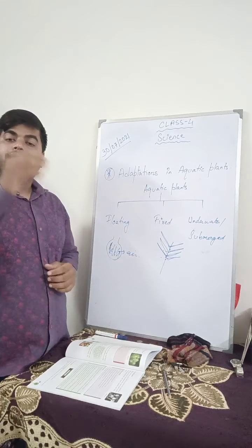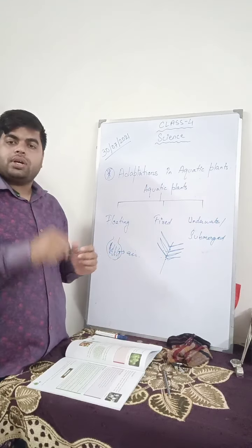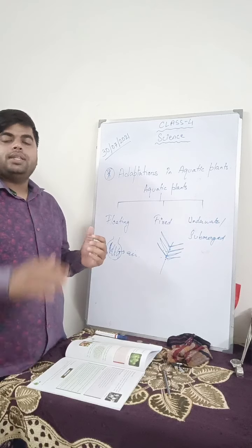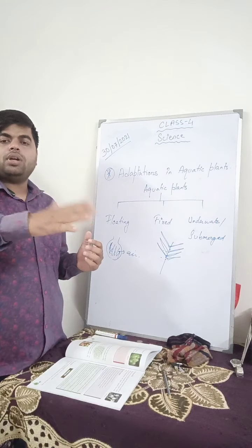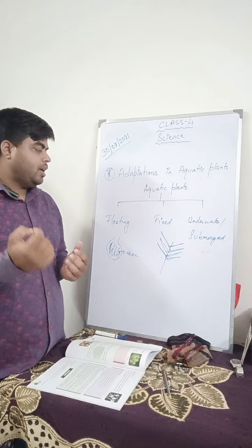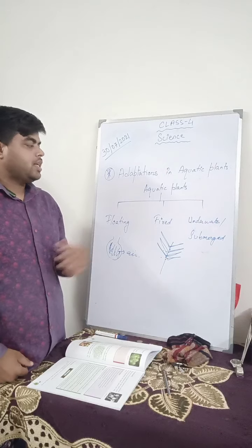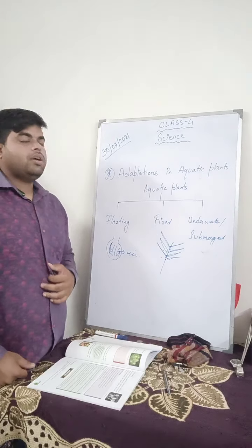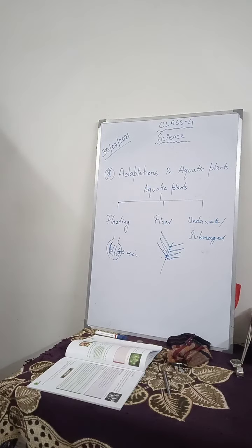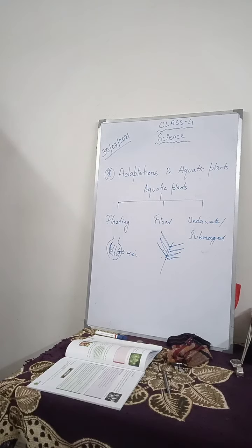Fixed plants — their roots are fixed to the soil, but they float on the water remaining in a fixed place. Underwater or submerged plants grow inside the water. I hope you have understood this, children.